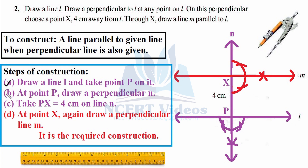Step three: take PX equal to 4 centimeters. The question specifies this measure, so use your ruler and measure 1, 2, 3, 4 centimeters from point P, mark the endpoint, and label it X.